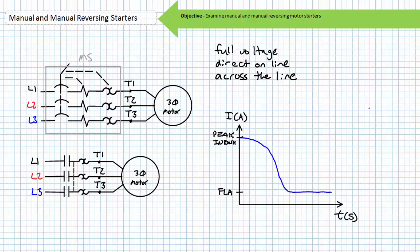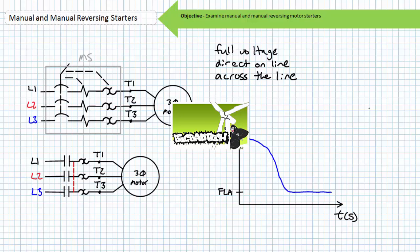Inrush current, although intense and undesirable from a distribution standpoint, is ordinarily brief. As a motor comes up to rated speed, increasing counter electromotive force, sometimes called CEMF, opposes the applied voltage and current quickly drops to a reasonable level. The electromagnetic interaction lecture available at the Big Bad Tech channel discusses the CEMF phenomenon.